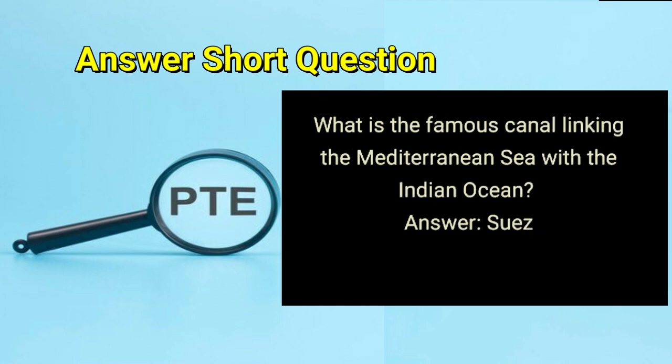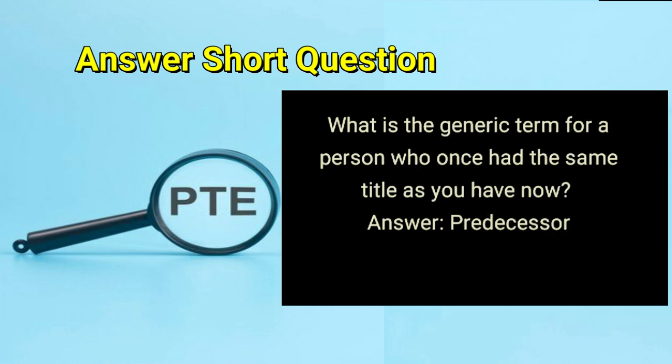What is the famous canal linking the Mediterranean Sea with the Indian Ocean? Answer: Suez. What is the generic term for a person who once had the same title as you have now? Answer: predecessor.